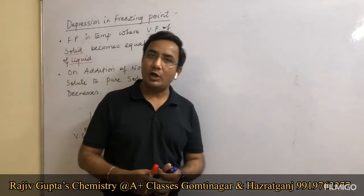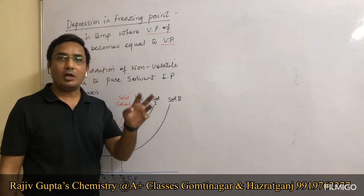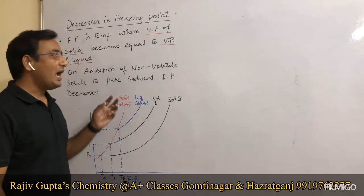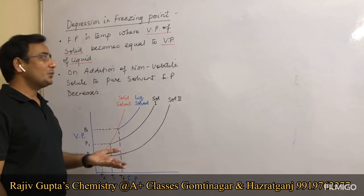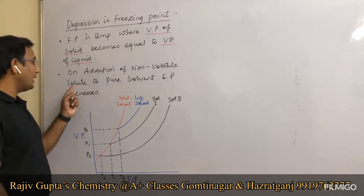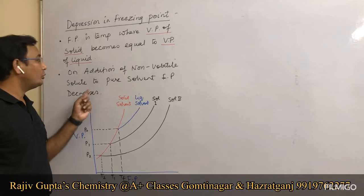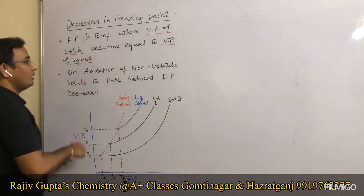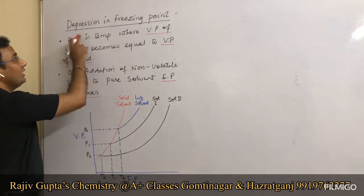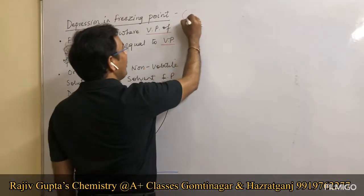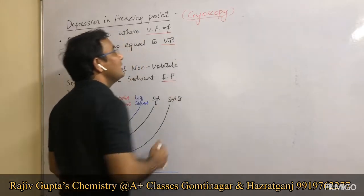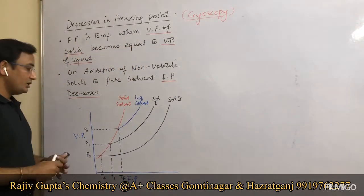Just as we discussed for relative lowering in vapor pressure, when we add a non-volatile solute to a solvent, the boiling point increases (elevation in boiling point) and the freezing point decreases. This decrease is called depression in freezing point, also known as cryoscopy.